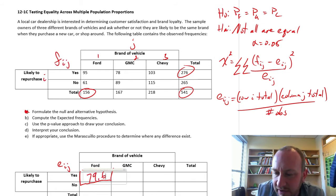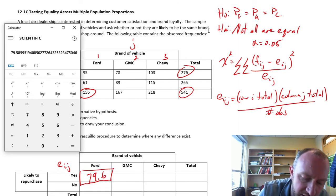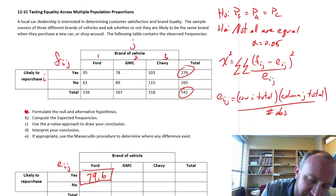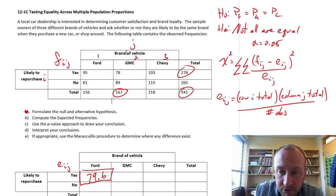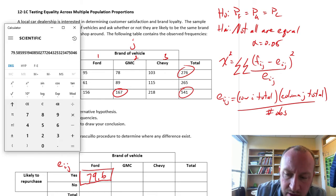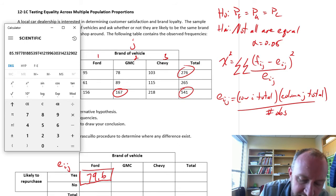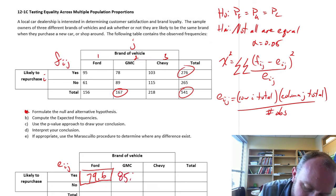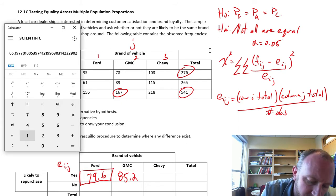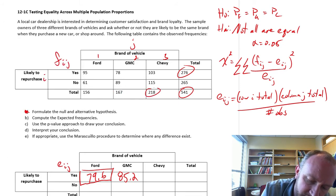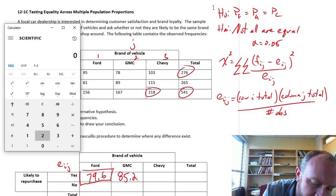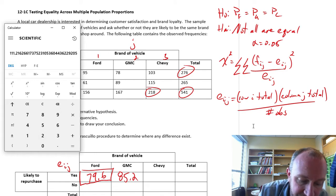And then if we fill in all of these, I'll show you a couple more. The next one, if we do GMC, that would be using the appropriate column total. So I'd be using 167 instead of 156. So this is 167 times 276 divided by 541, which is 85.2. The next one, I want this column now, so 218 times 276 divided by 541, which is 111.2.